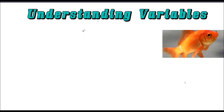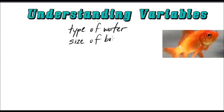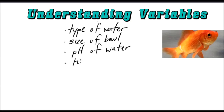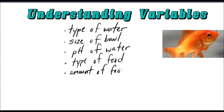If we just listed some things that could affect this goldfish — the type of water would be one. What else could affect the goldfish? The size of the bowl, the pH of the water — that's the acid or base level of the water. The type of food would affect the goldfish. How about the amount of food? And, thinking about the problem we just talked about, what about the amount of sunlight? So these are all variables that could have possible effects on this goldfish.